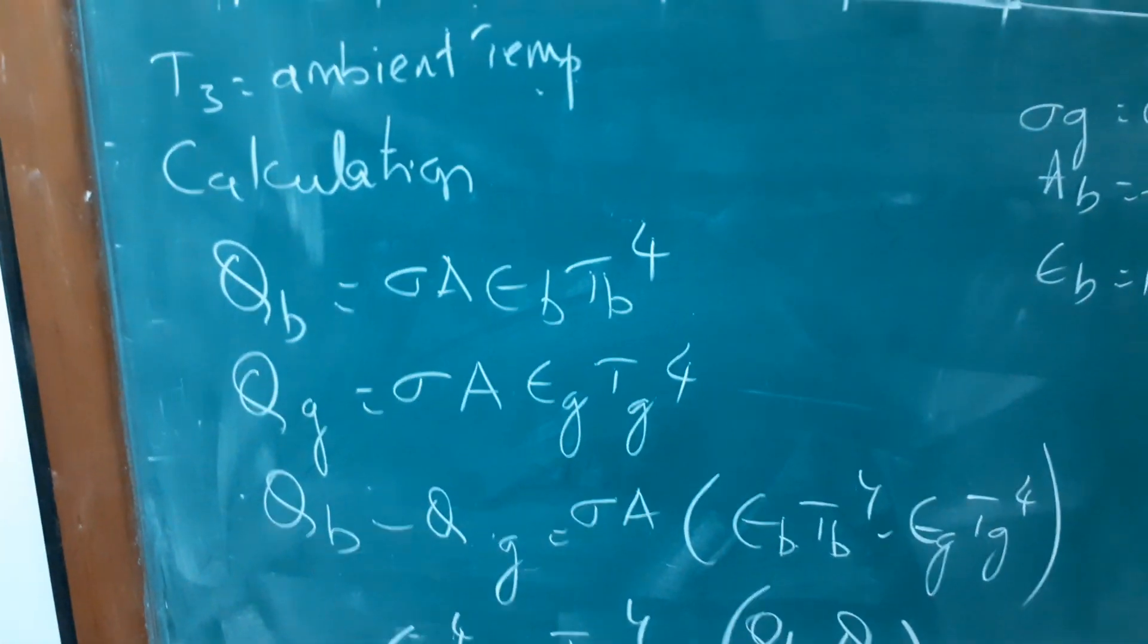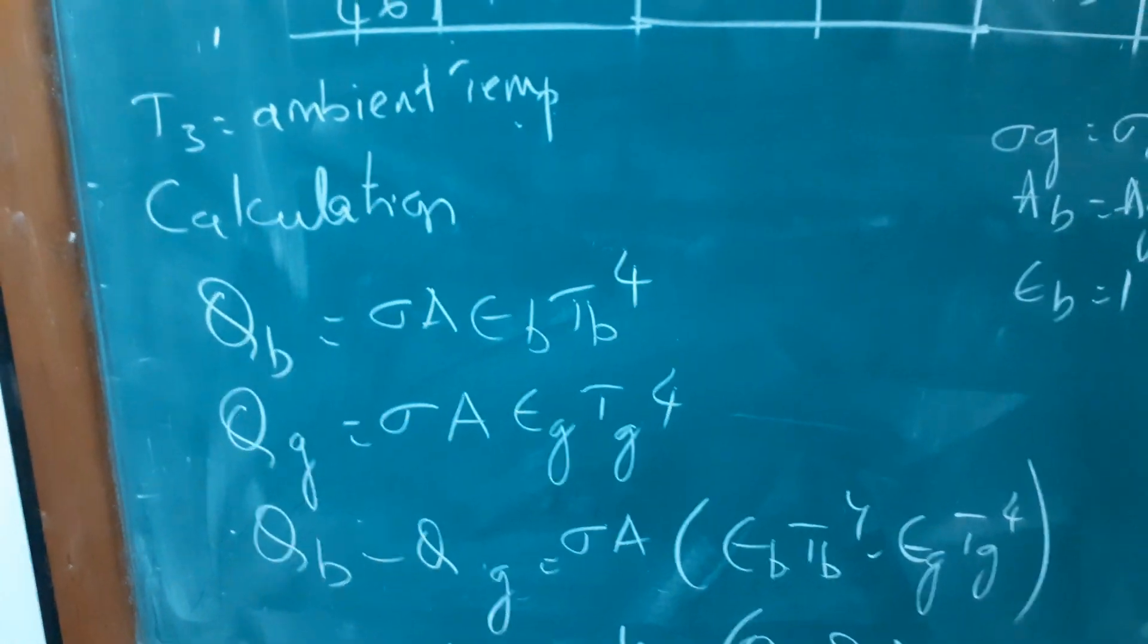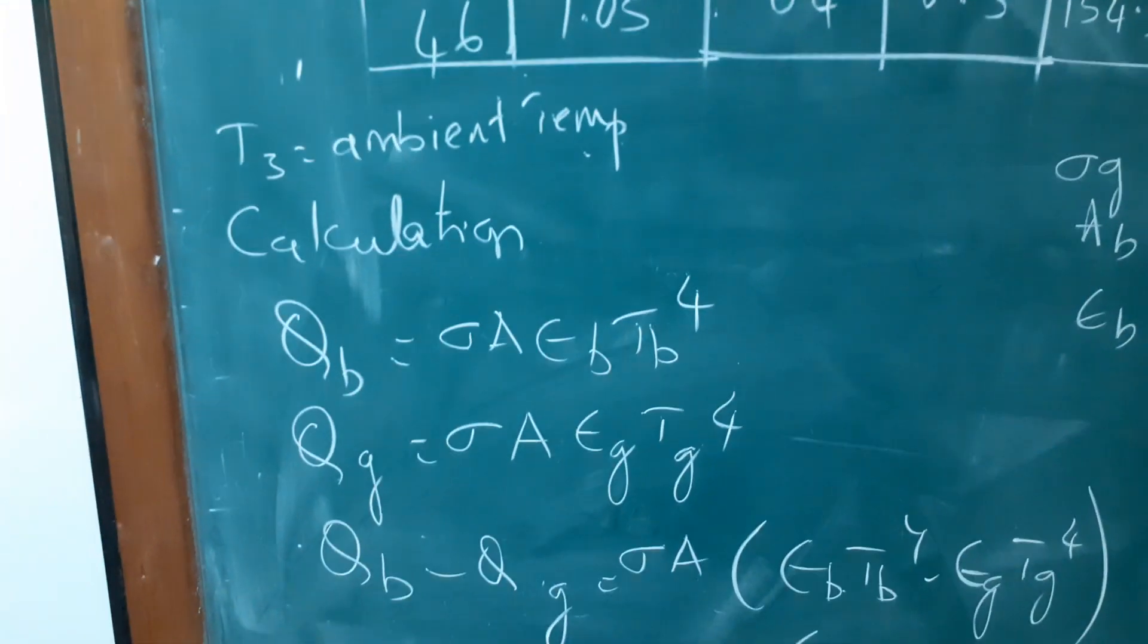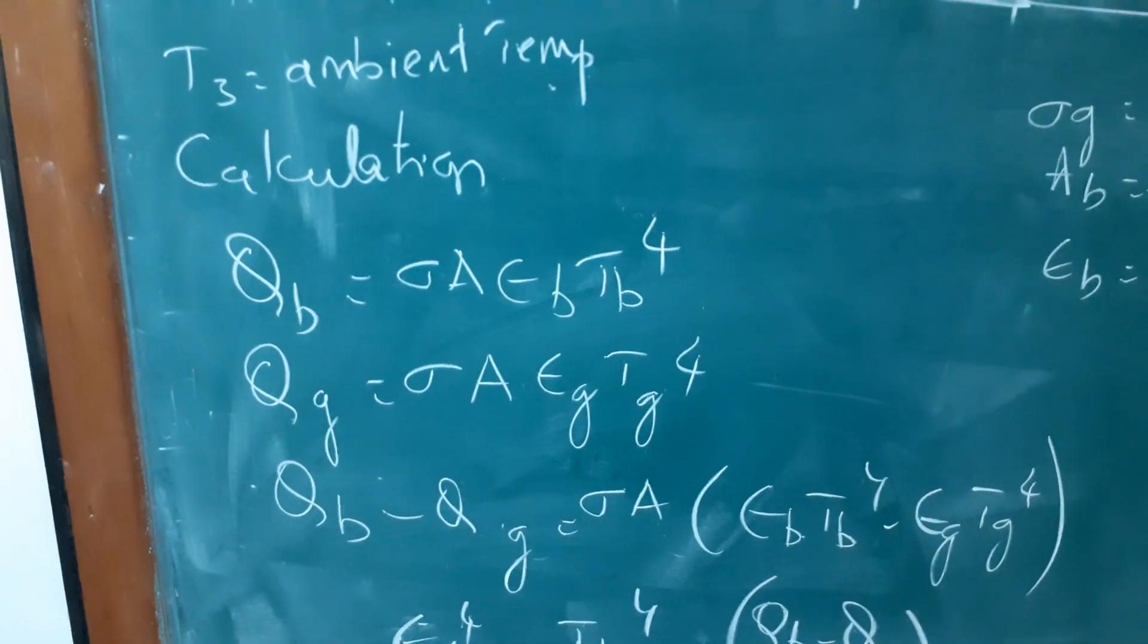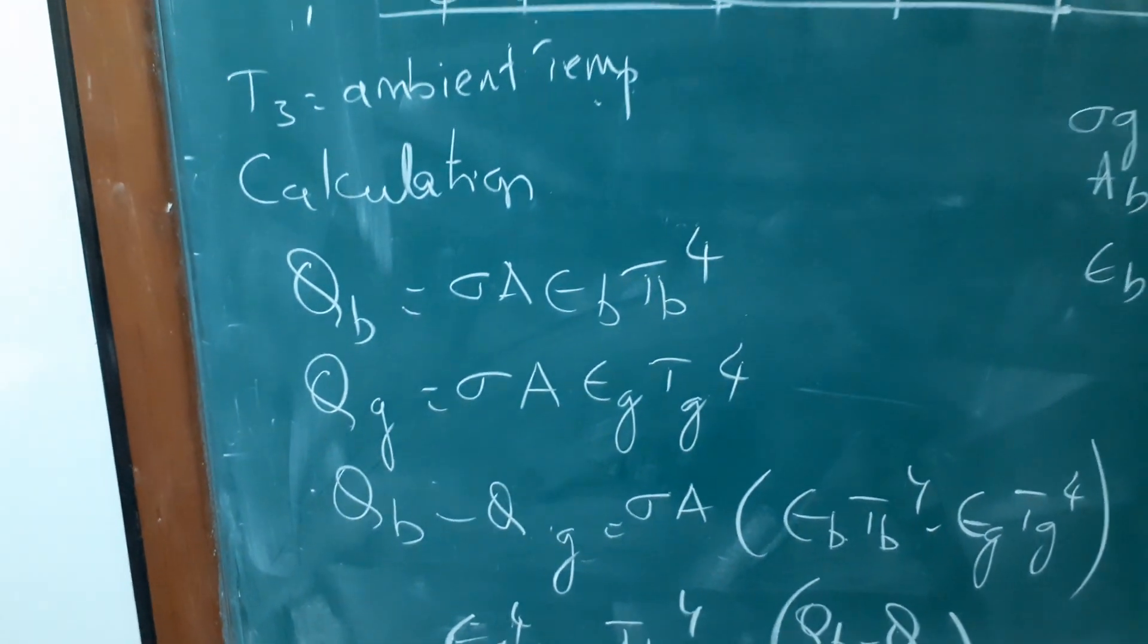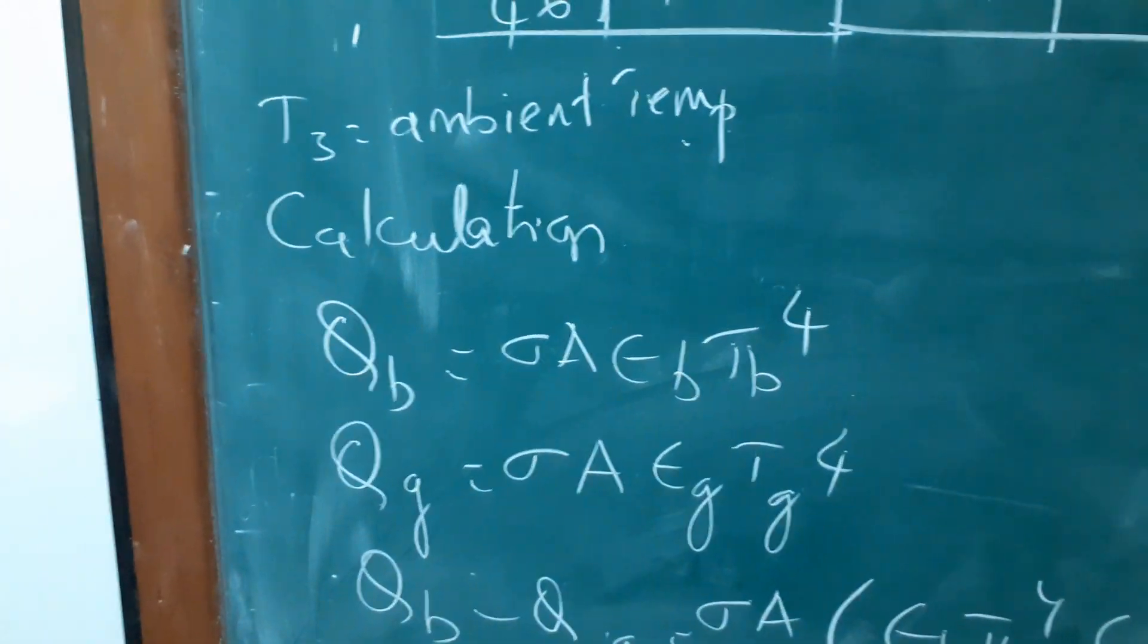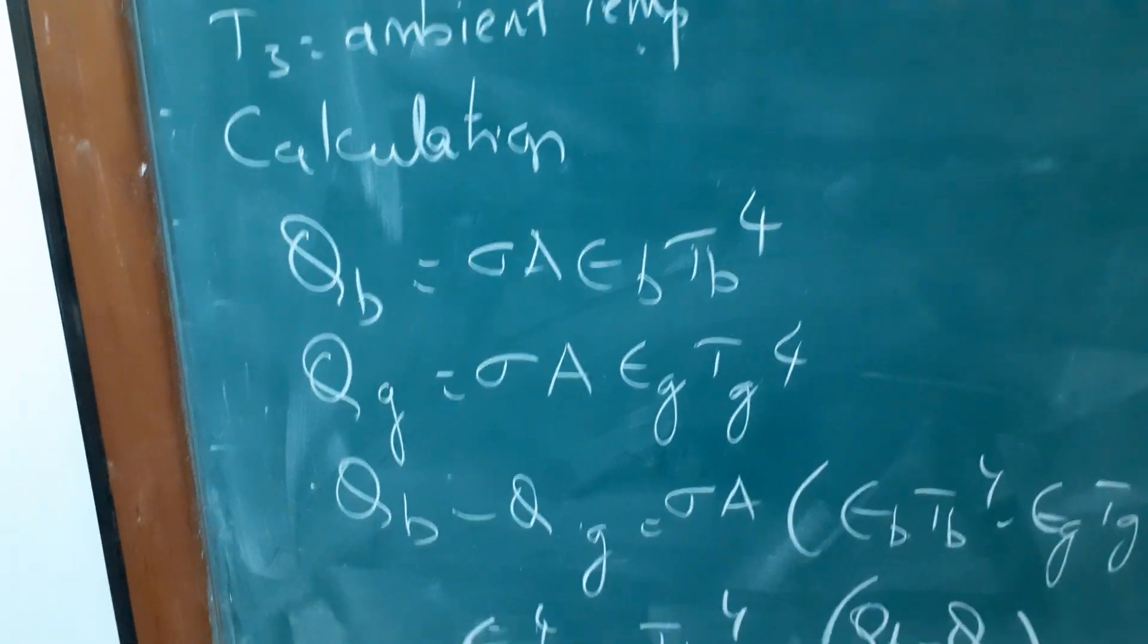So I get QB, that is heat transfer for the black body, is equal to sigma A epsilon B into TB to the power of 4. Now sigma is the Stefan-Boltzmann constant and A into epsilon B. Emissivity of black body is equal to the power of black body into temperature of black body in absolute Kelvin, not degree centigrade, in Kelvin to the power of 4.